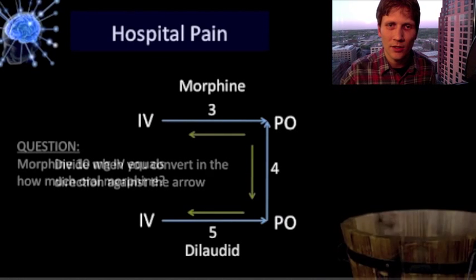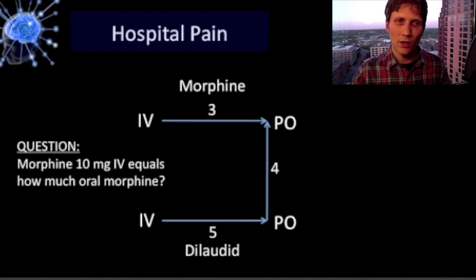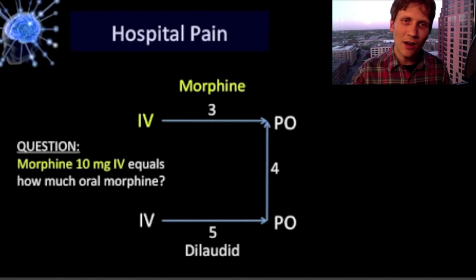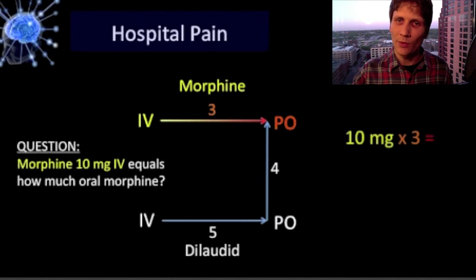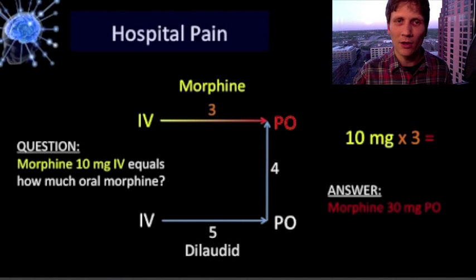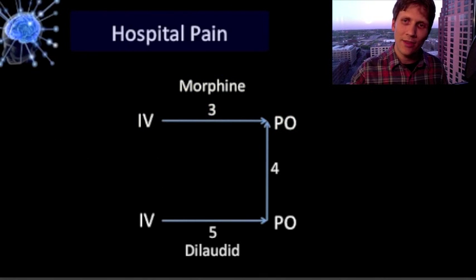Let's go over an example: converting morphine 10 milligrams IV to PO. You start on top and on the left — IV is on the left side, morphine is on the top. Our multiplier is three, so we multiply 10 milligrams by three and our answer is 30 milligrams oral. So 10 milligrams of IV morphine equals 30 milligrams of oral morphine.